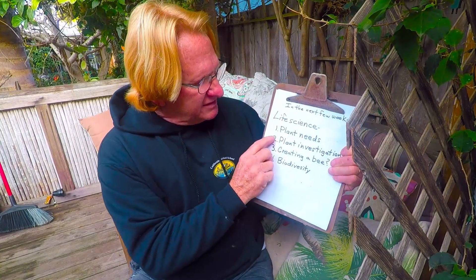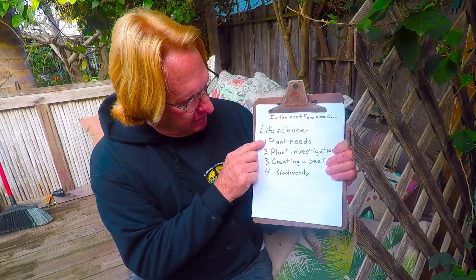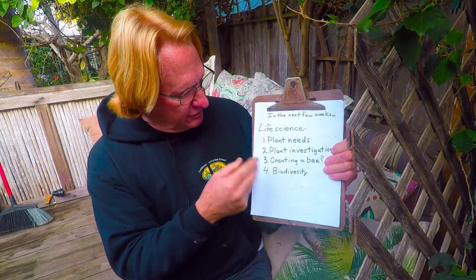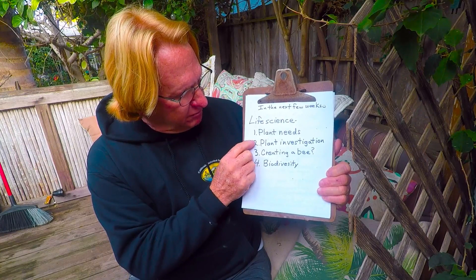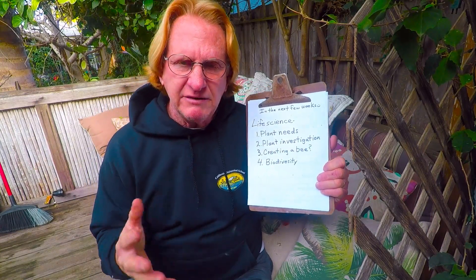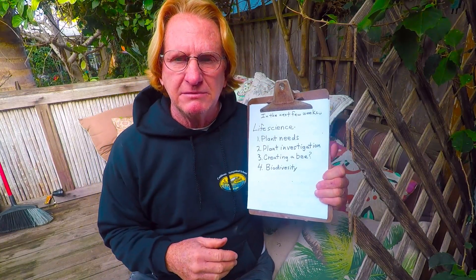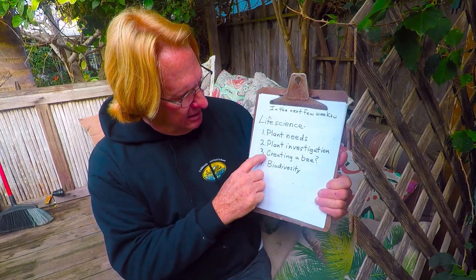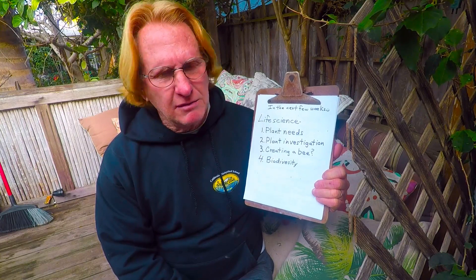This is all about life science. In the first few weeks, we're going to be going over plant needs — plants have specific needs in order to live. Then we're going to do plant investigations, experimenting with plants, making predictions and things like that. We're going to be using the scientific method to actually investigate plants. And then we're going to be creating a bee that will actually pollinate plants.